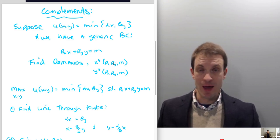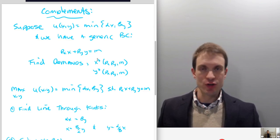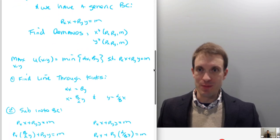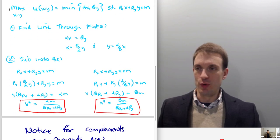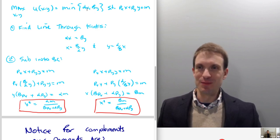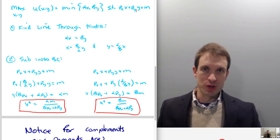We want to find our Marshallian demands, which will be in the following form: the optimal selection of good x depending on the prices of the two goods and income, and same thing for good y. So we'll set up the consumer's utility maximization problem — we want to maximize utility by choosing x and y, where the utility function is the minimum of alpha times x and beta times y, subject to our budget constraint.